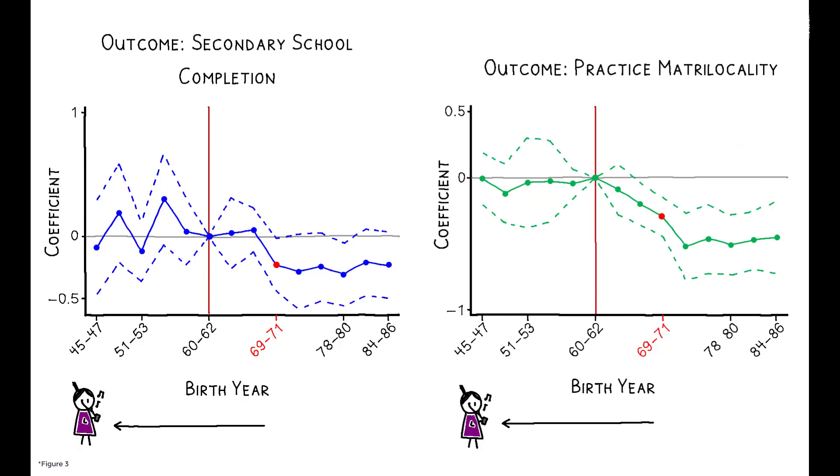To the left are cohorts who were older, and to the right are cohorts who were younger. For both outcomes, daughters who were older when the program was introduced are essentially unaffected. This is consistent with the idea that parental investments in these children had already been made.